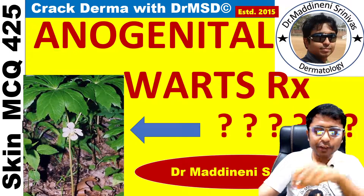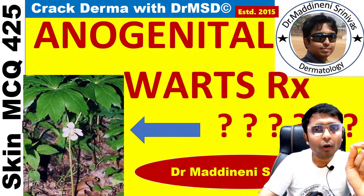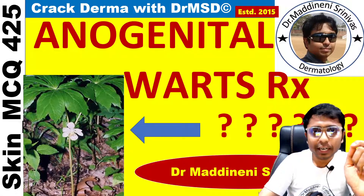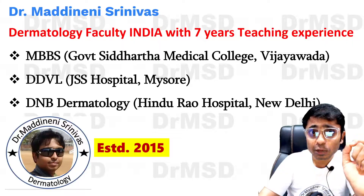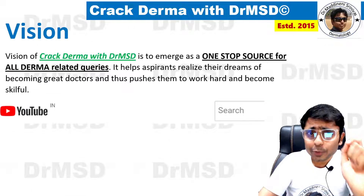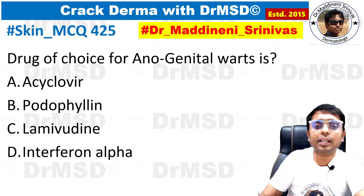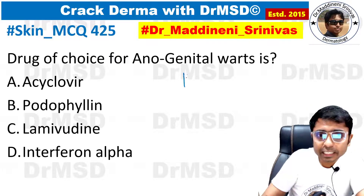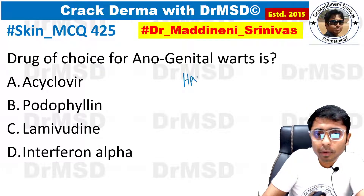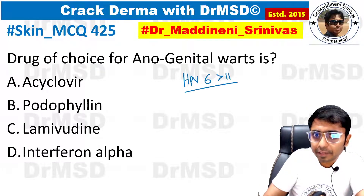Hello friends, in this video we are going to look at one very important sexually transmitted disease: anogenital warts. The causative agent is human papilloma virus 6 and 11.